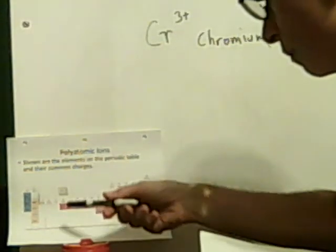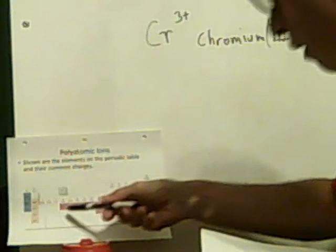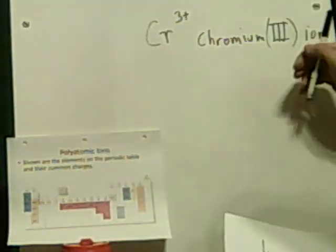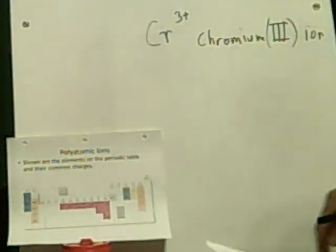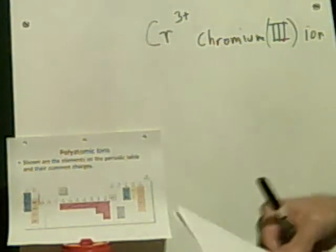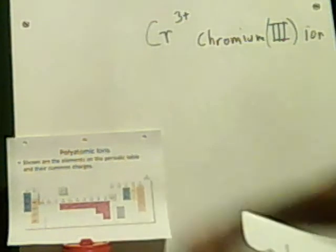On this particular chart, they only list one valence state for chromium, but chances are chromium will also appear as plus 2. That's the logic behind putting in the III. Putting in the III doesn't do any harm even if it wasn't absolutely necessary.